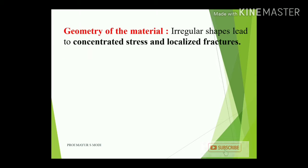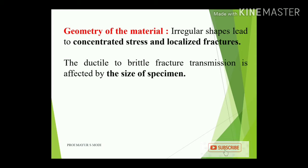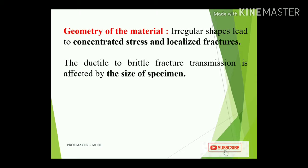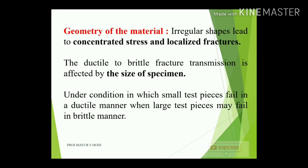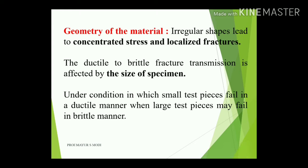Third factor is geometry of materials. Irregular shapes lead to stress concentration and localized fracture. The ductile-to-brittle fracture transition is affected by the size of the specimen. A small test piece of a given composition may fail in a ductile manner, while a large test piece of the same composition and material may fail in a brittle manner.